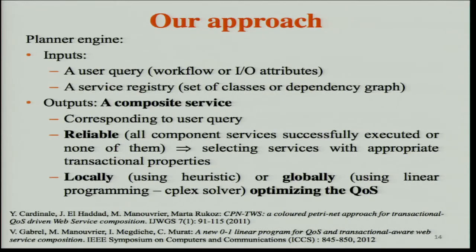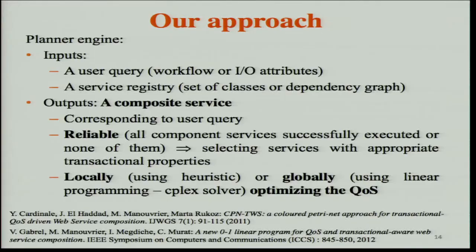These are the hypotheses of our approach — we use such described and organized services. What we do is: from the user query and the service registry, we offer a mechanism to automatically discover a composite service that corresponds to the user query and has the property of being reliable, meaning we ensure that all components will be executed or none of them. For this, we have defined specific rules and mechanisms to ensure we select services with appropriate transactional properties.